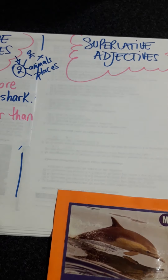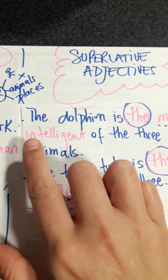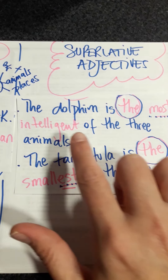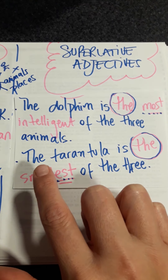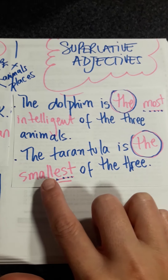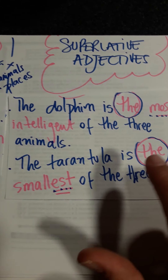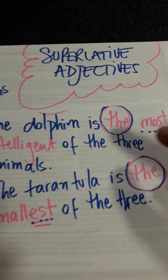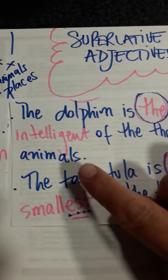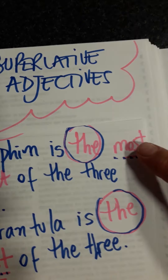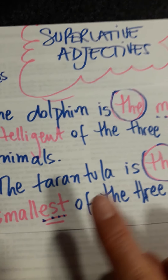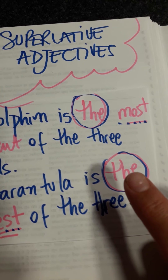Let's see the written version. For comparing three, we can say that the dolphin is the most intelligent of the three animals, and the tarantula is the smallest of the three animals. For superlative adjectives, we must include 'the'. If the adjective is long, we put 'the most'. If the adjective is short, we add '-est', and of course 'the' before that.